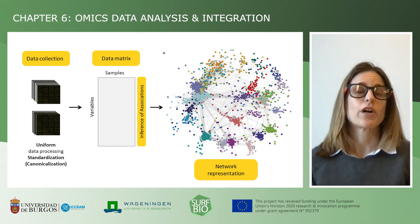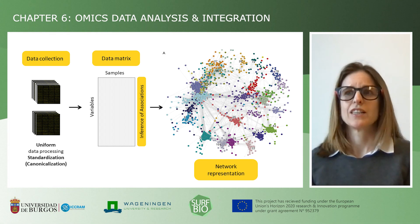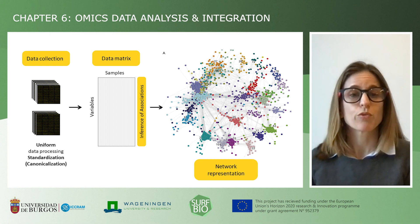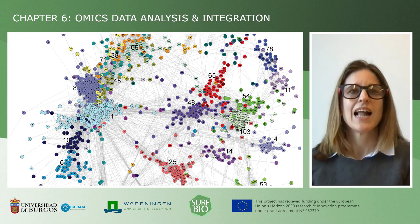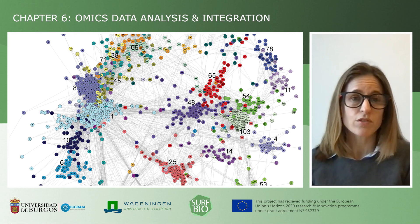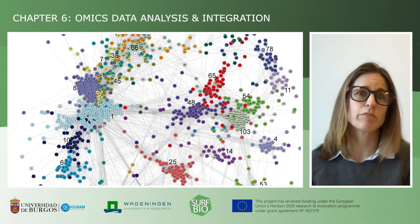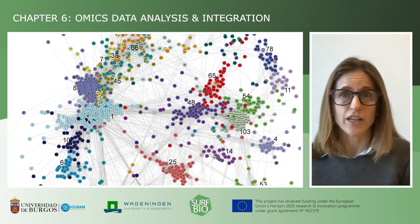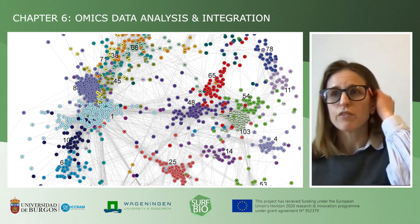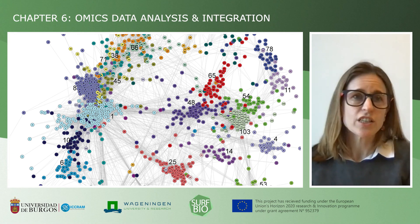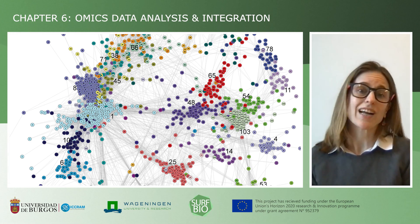We then look for associations among the active genes in this big matrix and build an association via network representation. A network is a graph of concepts and relations — nodes, the dots in the figure, represent variables, and edges, the connections between the dots, represent significant associations. You can already appreciate by zooming in on the previous network that group number 25, colored in red, are genes that share some association or characteristics.